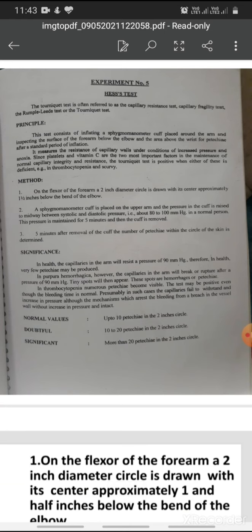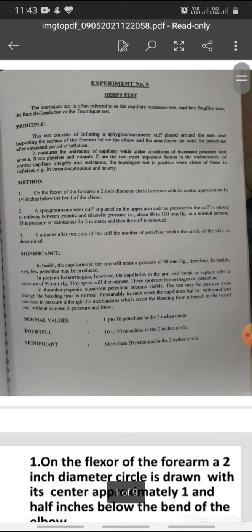What is the principle of this test? The test consists of inflating a sphygmomanometer cuff placed around the arm and inspecting the surface of the forearm below the elbow and the area above the wrist for petechiae after a standard period of inflation. We tie a sphygmomanometer on our arm, then after a standard period of time we notice petechiae.